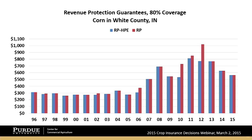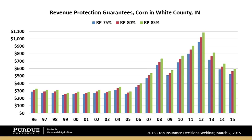Looking at revenue guarantees at 75%, 80%, and 85% coverage levels for the revenue protection product: there were several years — 2008, 2010, 2011, 2012, and 2013 — where the revenue guarantee was very strong. In 2011 and 2012, the revenue protection guarantee was above all cost of production, but that's very unusual and definitely not the case in 2015. In 2015, the 75% product provides about $530, the 80% about $565, and the 85% about $600 in revenue protection.